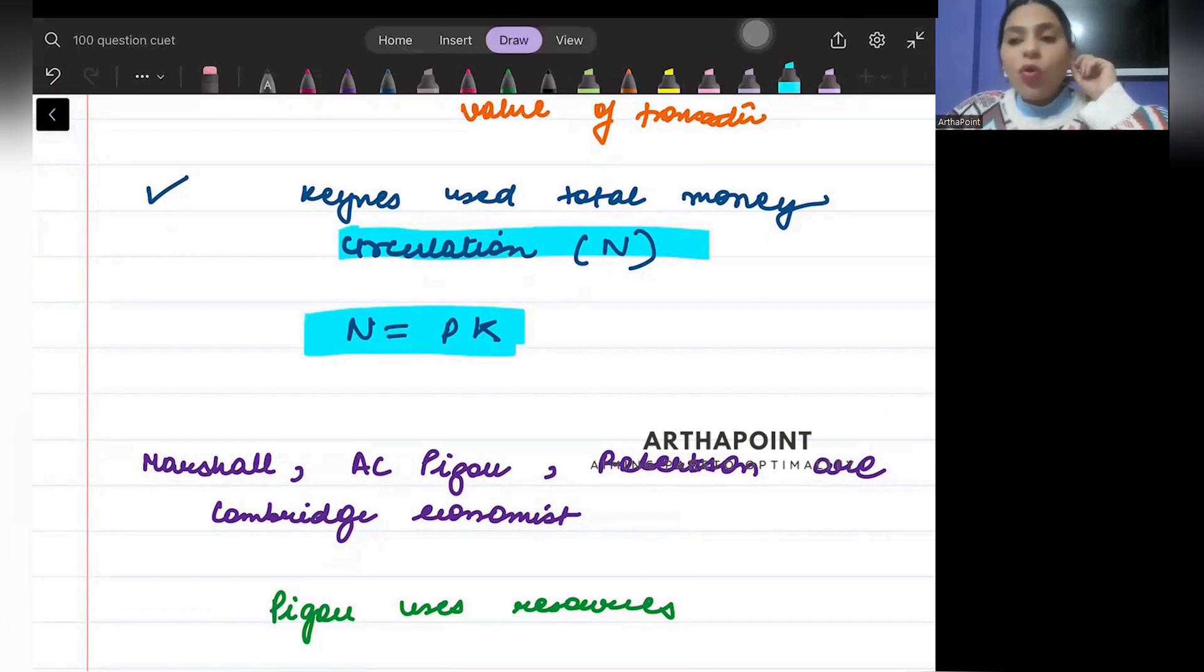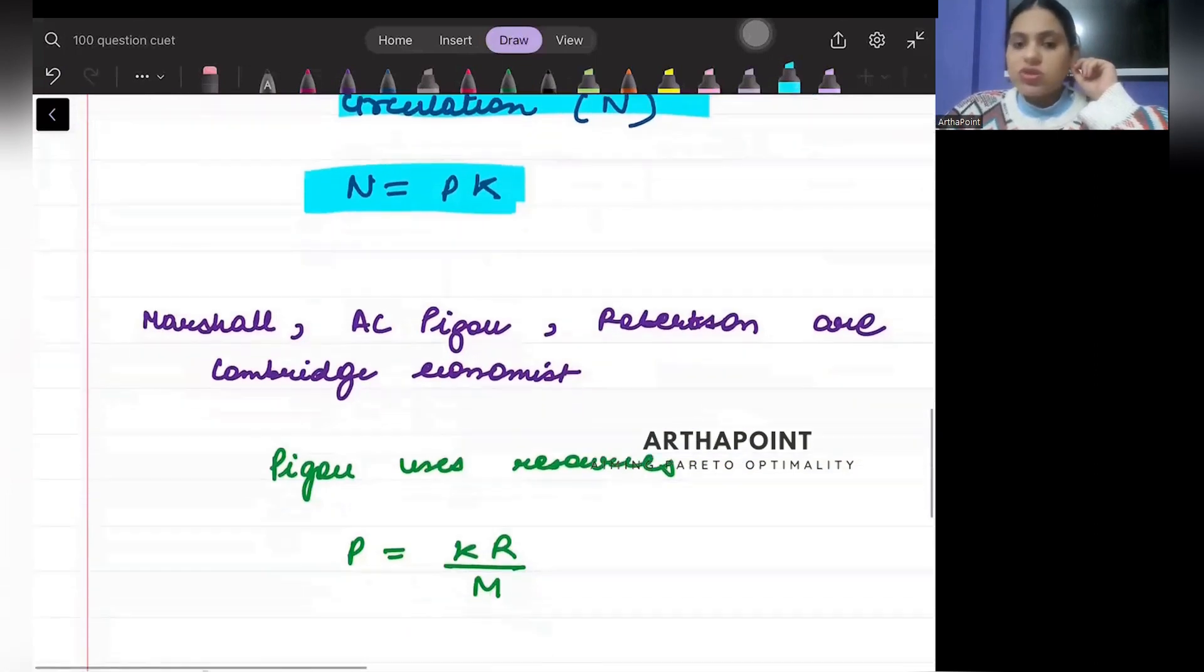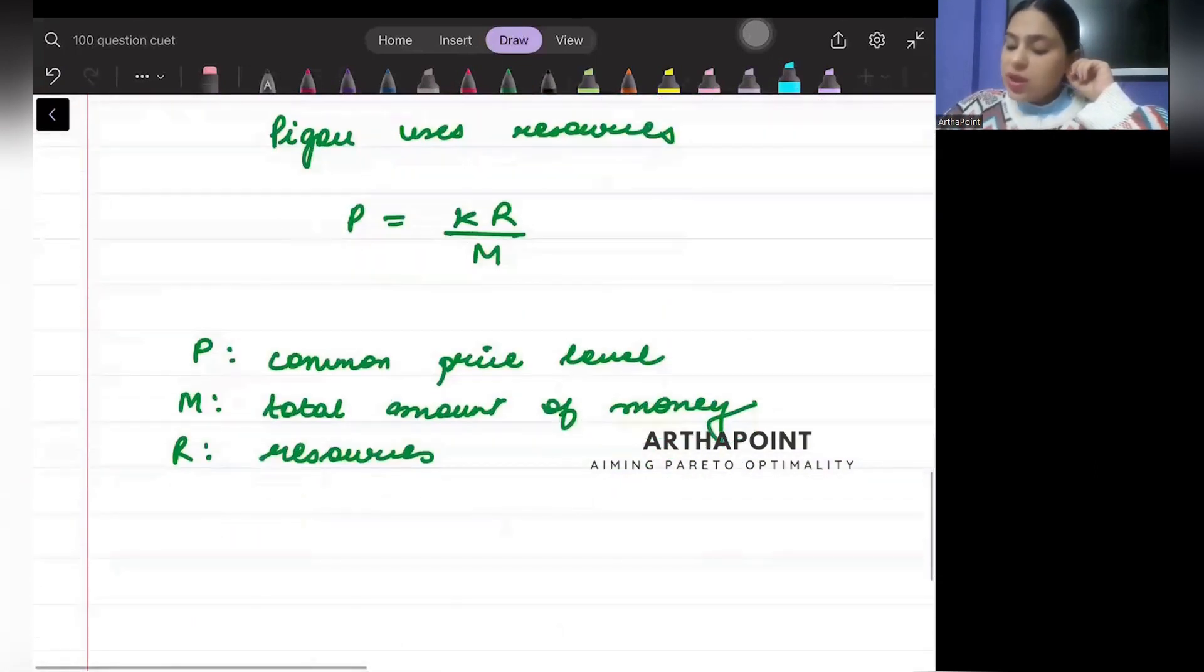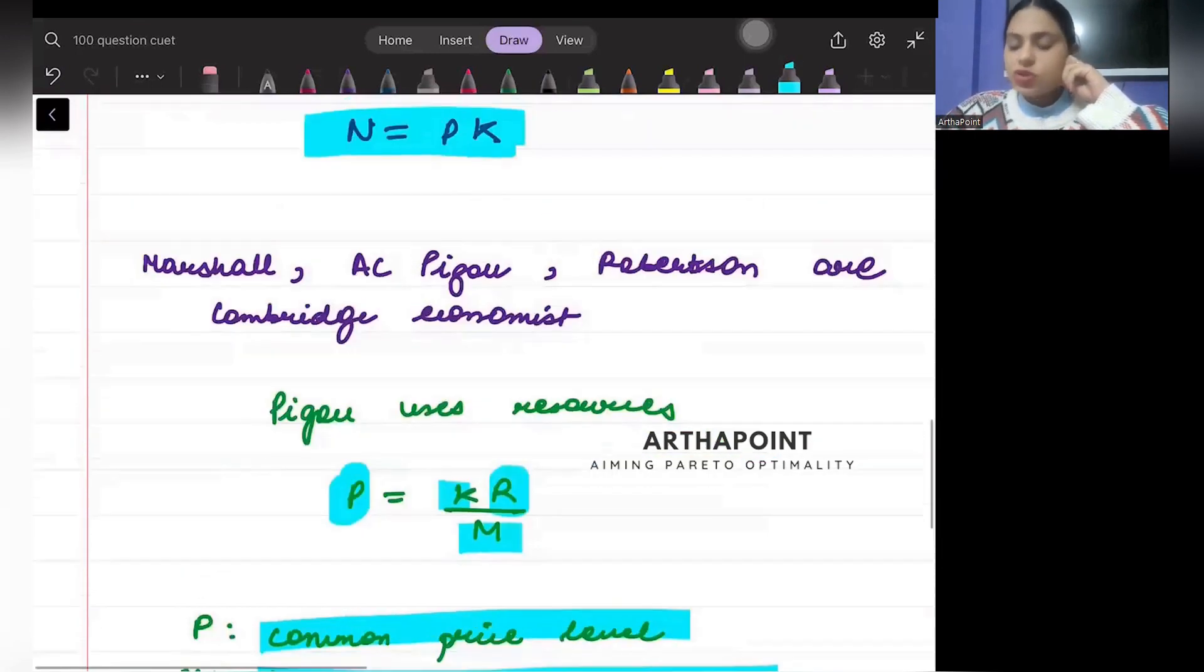And what Pigou did is he used resources R to tell the amount of money in the economy. So he said P is the common price level, it is K times R divided by M, where M is the total amount of money and R is the resources in the economy. This part is not in the options but you should know.